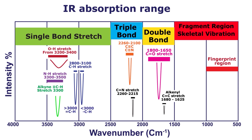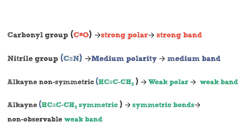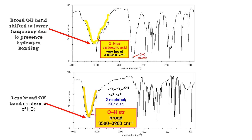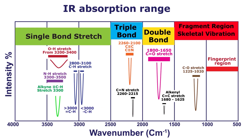Conjugated C=C will appear at a lower wavenumber than non-conjugated C=C. The C-O stretch appears between 1225 and 1020 reciprocal cm. Carbonyl C=O has a strong polar bond, which is why it is seen as a strong band in the IR spectrum. Medium polar groups such as nitrile and asymmetric bonds are seen as medium peaks. Weak polar and asymmetric bonds such as butyne have very weak or non-observable bands in infrared spectroscopy. Remember, some peaks get broader or sharper, or a shift in peak position occurs due to the hybridization state or changes in electron distribution caused by neighboring groups.